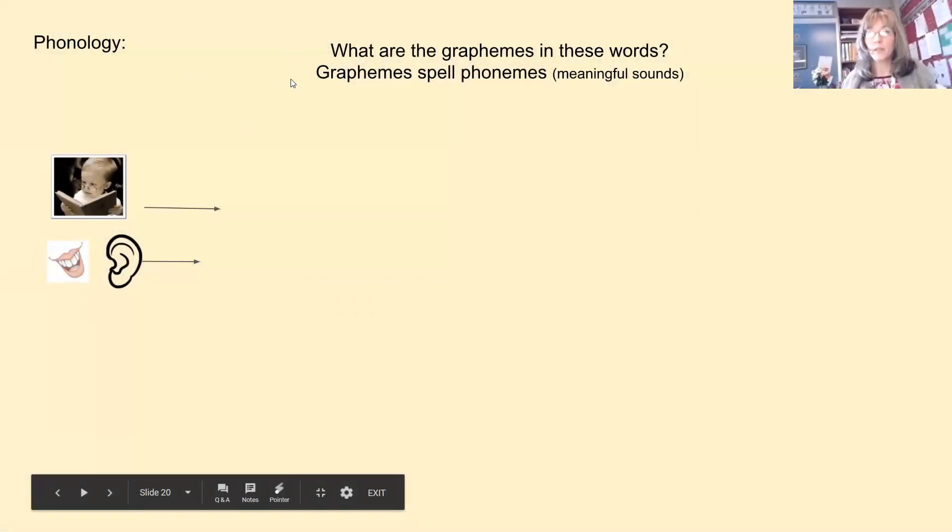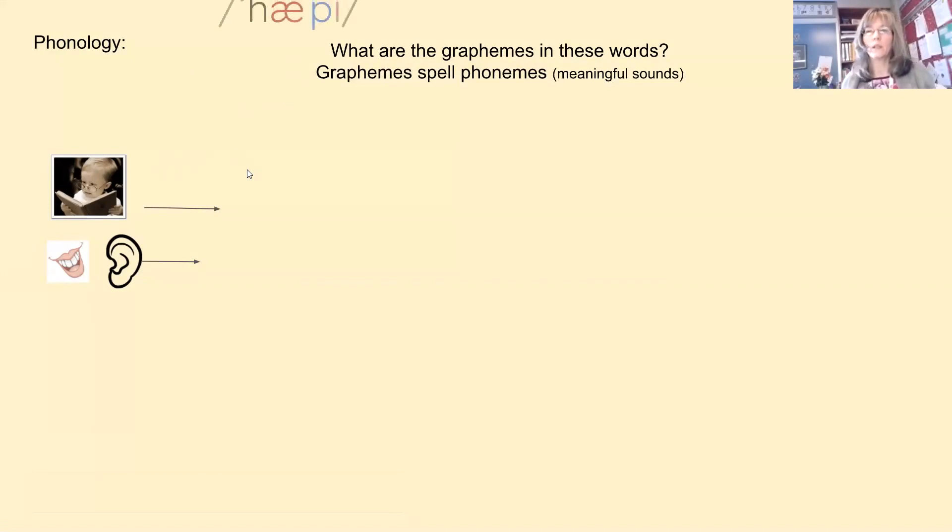There is some phonology, some of the sounds that we are hearing. So when you hear happy, I want you to feel what your mouth does. Happy. And if you put your fingers right at the corner of your mouth, happy. You can feel your muscles work on the E. So you have happy.